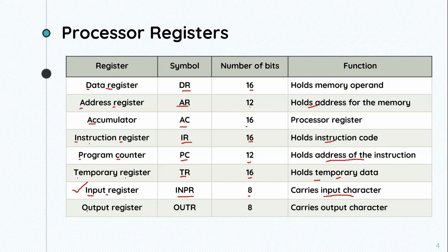The output register has the symbol OUTR — OUT for output and R for register. The number of bits is 8, and it holds the output character. So the input register handles the input character and the output register handles the output character.